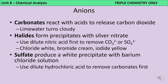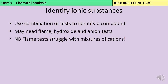For anion tests: carbonates react with acids to release CO₂ bubbles — test with lime water. Halides (chlorides, bromides, iodides) form precipitates with silver nitrate: first add dilute nitric acid to remove carbonates/sulfates, then add silver nitrate — silver chloride is white, silver bromide is cream, silver iodide is yellow. Sulfates are tested by adding barium chloride solution after treating with dilute HCl to remove carbonates. For the required practical, you may need to combine flame tests, hydroxide tests and anion tests to identify an unknown substance.